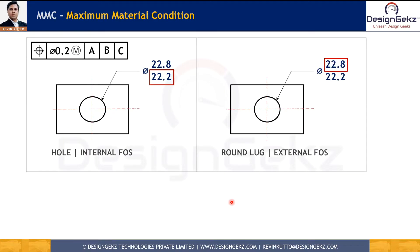Maximum material condition is the condition of a feature of size in which it contains the maximum amount of material within the stated limit of size. For example, a hole varying from 22.2 to 22.8 — when the hole is produced at the lower size of 22.2, it has the most material. Therefore, 22.2 is the maximum material condition for this internal feature of size.